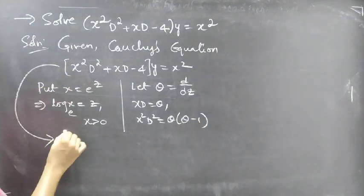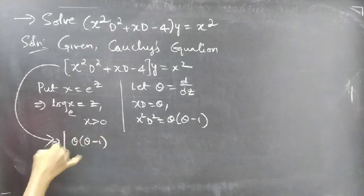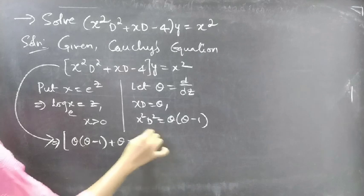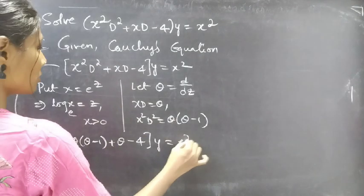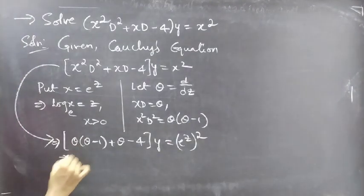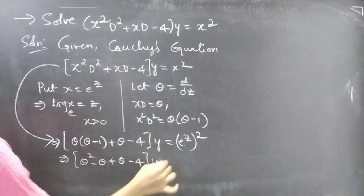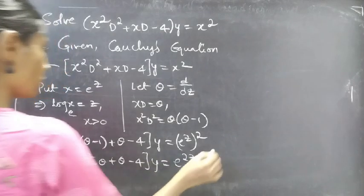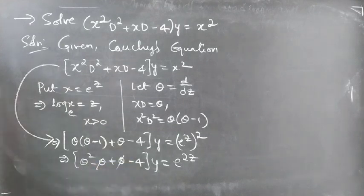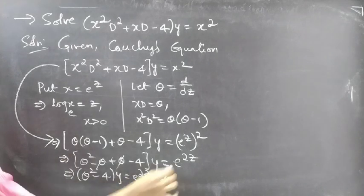Now this equation becomes theta times theta minus 1 plus theta minus 4 into y equals — replacing x by e to the power z — e to the power 2z. The minus theta and plus theta cancel, giving theta squared minus 4 into y equals e to the power 2z.